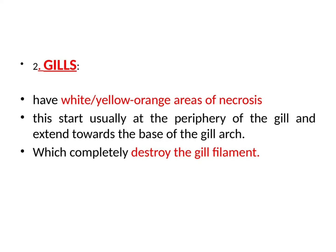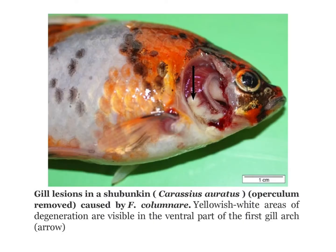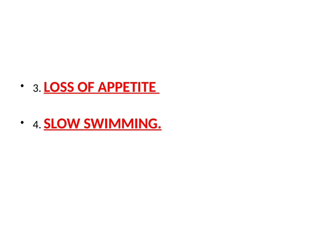Now let's see the clinical signs in the gills. Gills have white or yellow-orange areas of necrosis. This starts usually at the periphery of the gill and extends towards the base of the gill arch, which completely destroys the gill filaments. In this image, you can see gill lesions caused by Flavobacterium columnare — yellowish-white areas of degeneration are visible clearly in the ventral part of the first gill arch, represented by arrow. Apart from body and gill signs, you can also see other signs like loss of appetite and slow swimming.